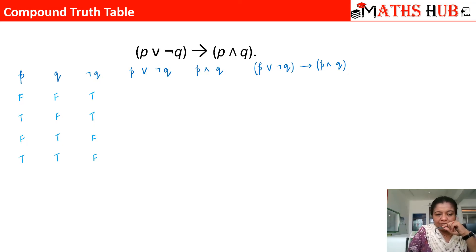Now let us combine p or negation q. F or T will be T. T or T will be T. F or F will be F. T or F will be T. Now what is p and q. F and F is F. T and F is F. F and T is F. T and T is T.